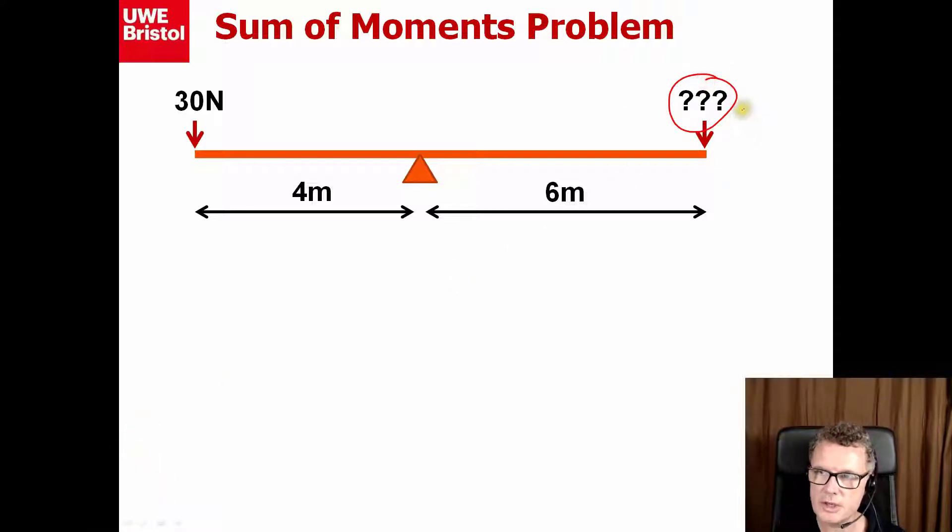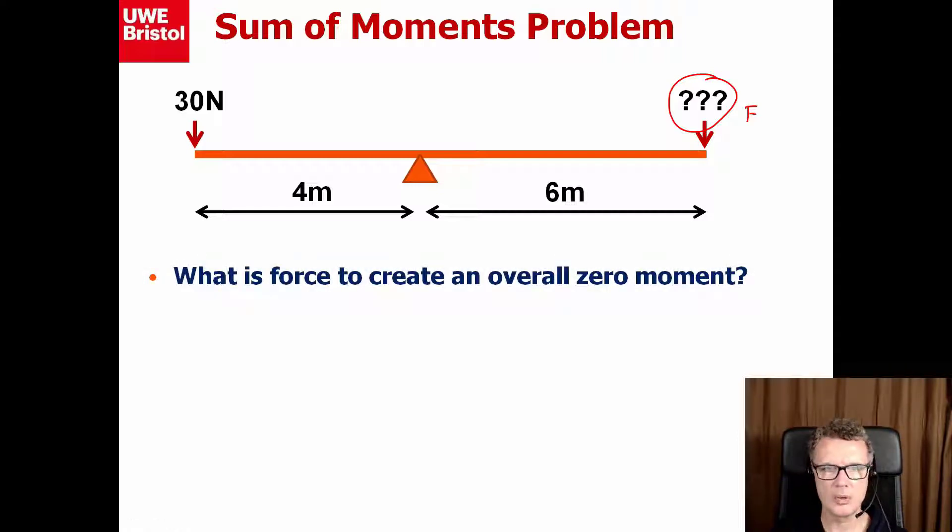So there's an unknown force here we'll call it F and it's going down. What I want to do is say to myself, what is the force that's going to create an overall zero moment on that beam?